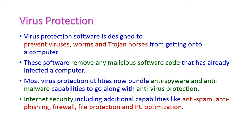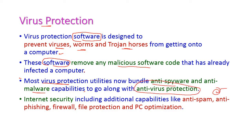Virus protection is software — otherwise called antivirus software — designed to prevent viruses, worms, trojans, and other threats from getting into our computer. These softwares also remove malicious code that has already infected the computer system. Most virus protection utilities bundle anti-spyware and anti-malware capabilities. When it comes to internet security, it includes additional capabilities like anti-spam, anti-phishing, firewall, file protection, and PC optimization.